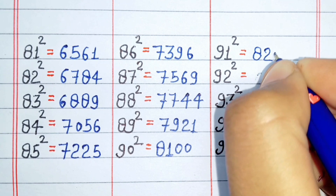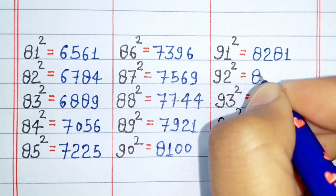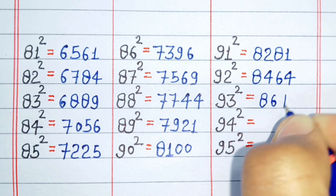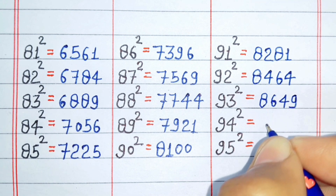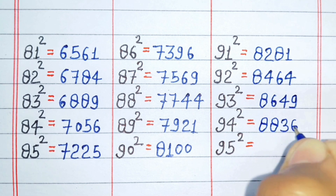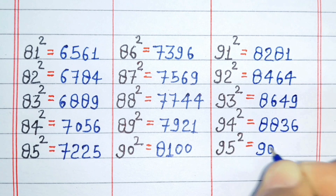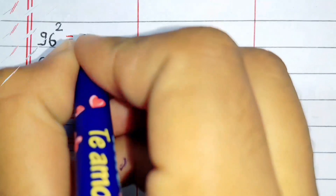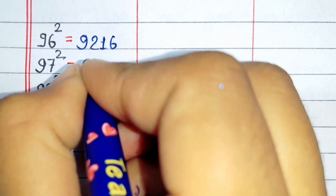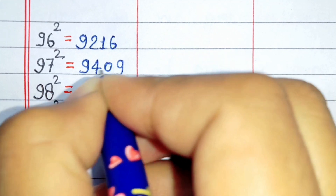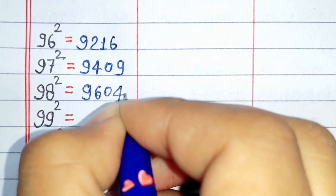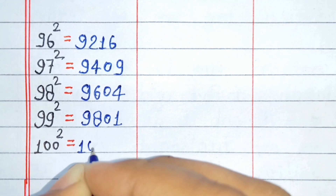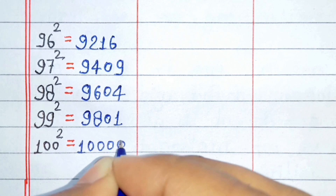Square of 91 is 8281. Square of 92 is 8464. Square of 93 is 8649. Square of 94 is 8836. Square of 95 is 9025. Square of 96 is 9221. Square of 97 is 9409. Square of 98 is 9604. Square of 99 is 9801. Square of 100 is 10000.